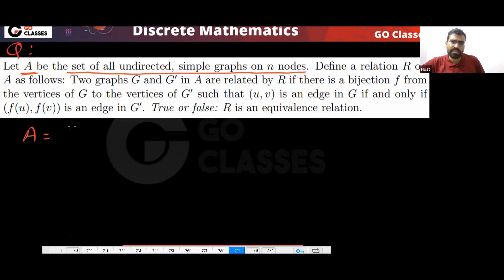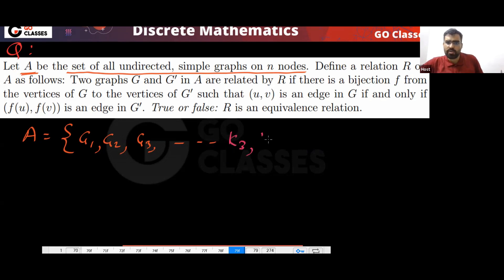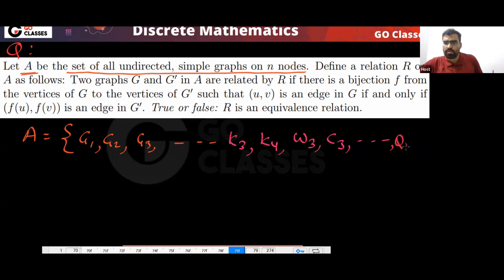In A, you have all the simple graphs — for example K3, K4, W3, C3, and so on. Like this you have all the graphs, for example Q2 and so on.